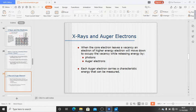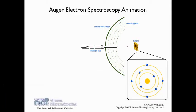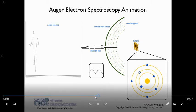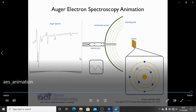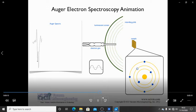Each auger electron carries a characteristic energy that can be measured. This can be understood by this particular video. As an electron gun moves electrons into the atomic orbital, it will try to release the core electron. A higher energy electron will then occupy this vacancy, and a further electron will be released out — this gives us the auger spectra.